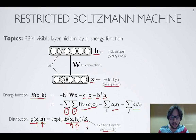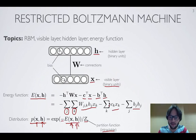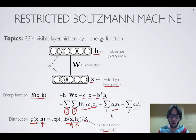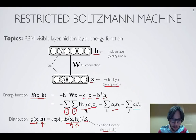Notice that if a bias Ck is negative, then xk being equal to 1 increases the energy, and since high energy is associated with low probabilities, a negative bias expresses a preference for xk not being 1 — we'd prefer it to be 0. Conversely, if Ck is positive, we prefer xk equal to 1. Similarly, if bias bj is positive, we prefer hj equal to 1; if negative, we prefer 0.